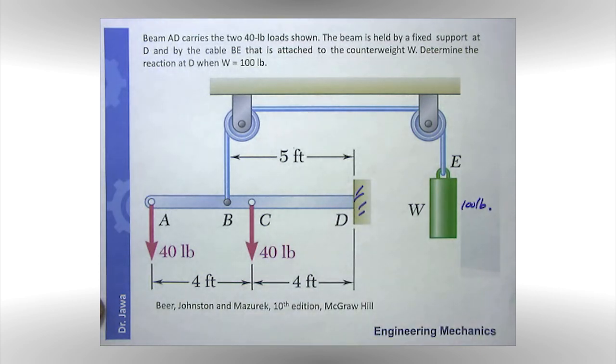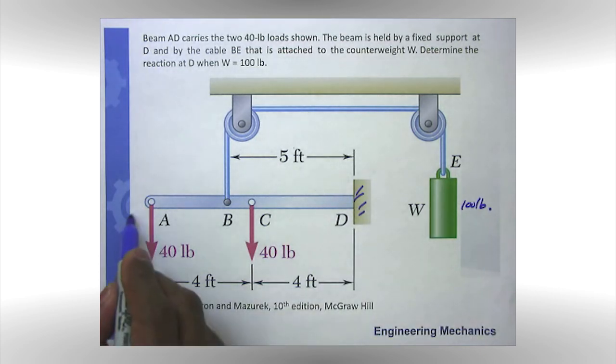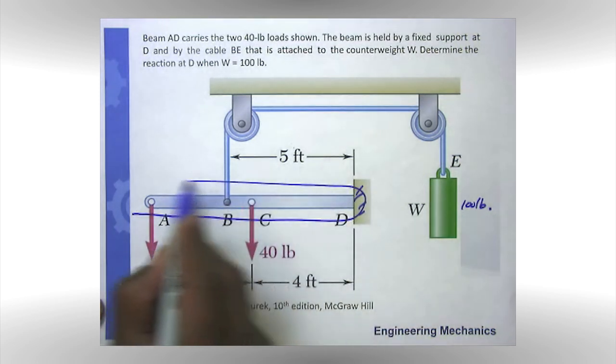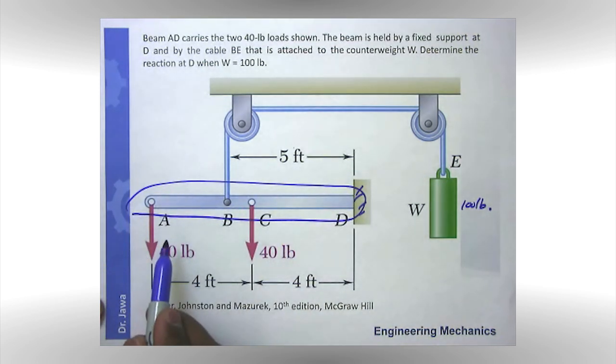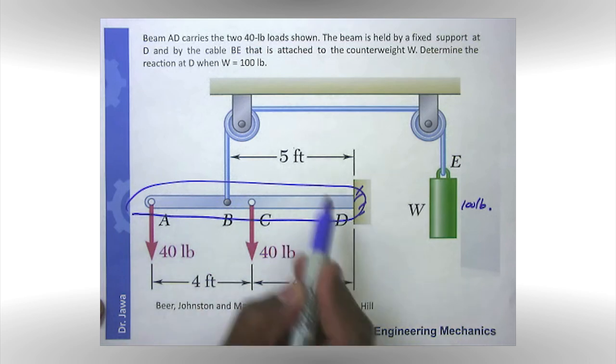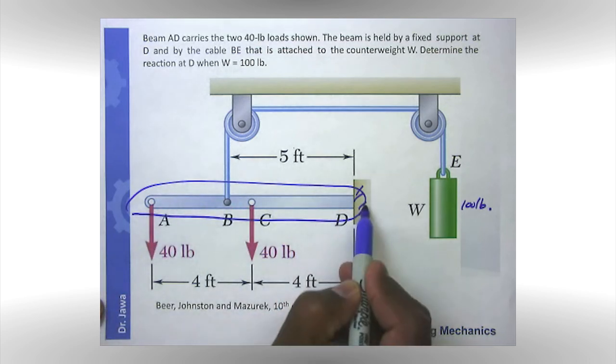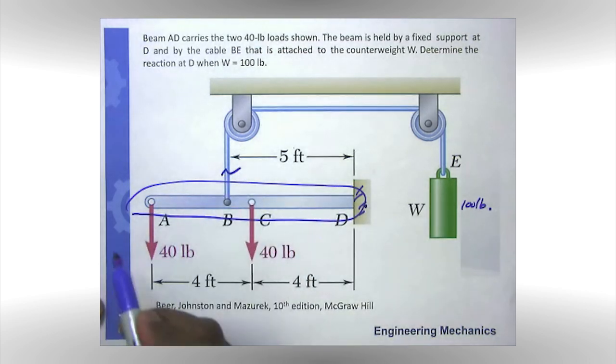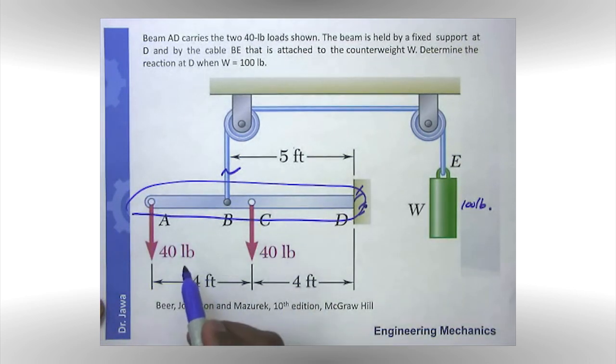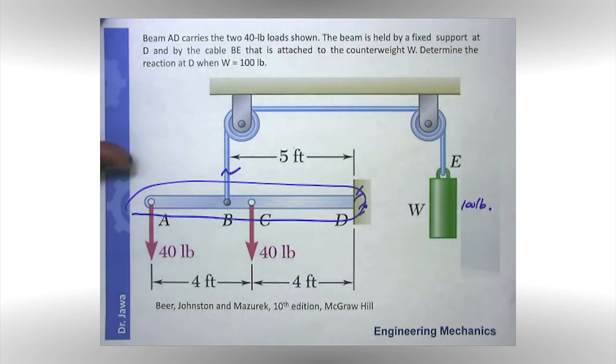So again, step number one is drawing the free body diagram of this beam, meaning I have to isolate this free body from the fixed support as well as from the cable. Then I have to draw the free body diagram, show all the forces, show all the critical dimensions, and then I'll have to write the equations and solve. That's what we are going to do in the next step.